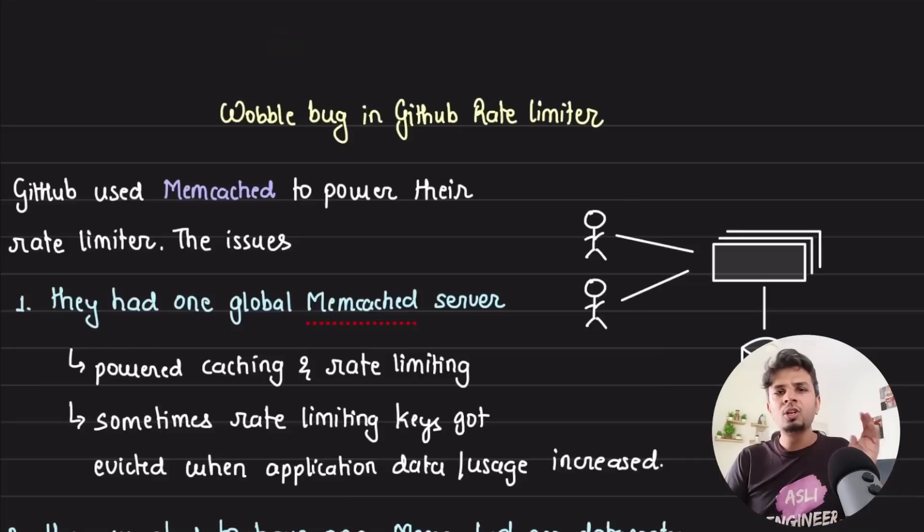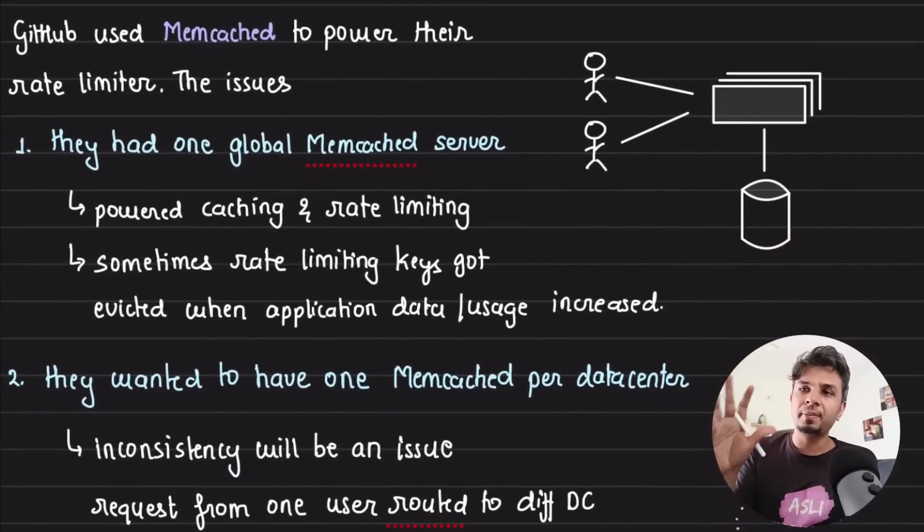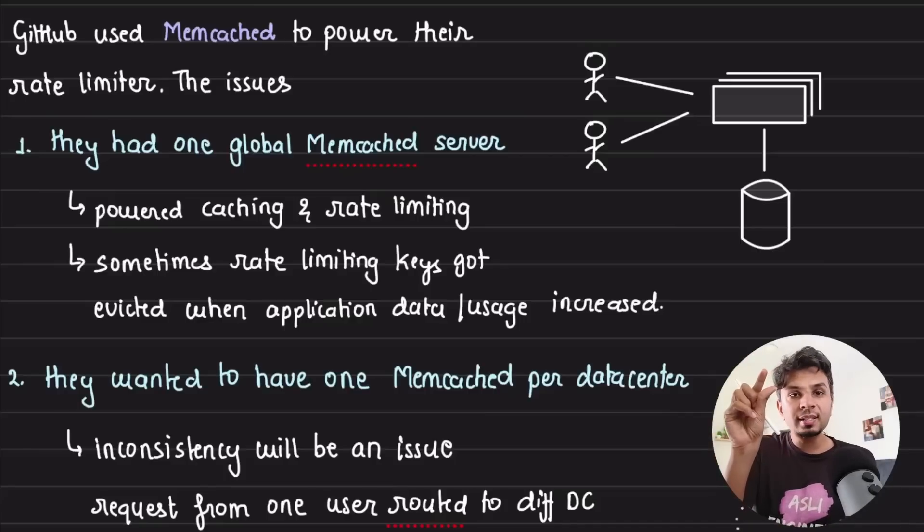All the details about my courses can be found in the description down below, so do check them out. And now let's resume. So the initial setup of GitHub's rate limiter was powered by Memcached. A single Memcached cluster present in a single data center powered their entire caching use cases as well as their rate limiting use cases.